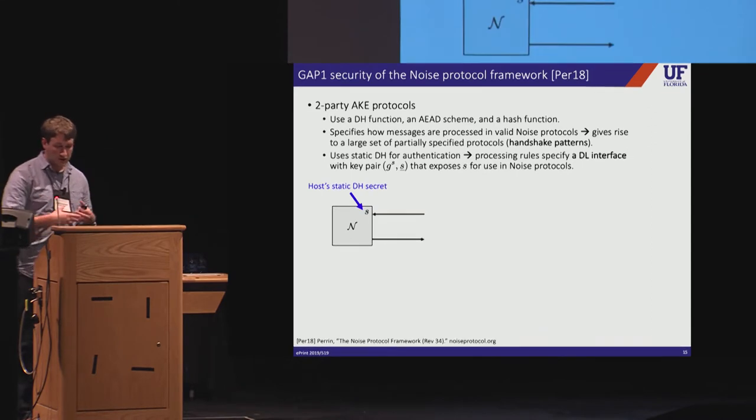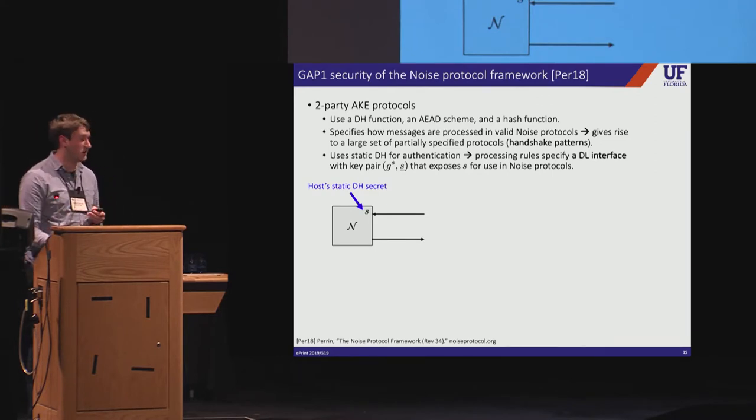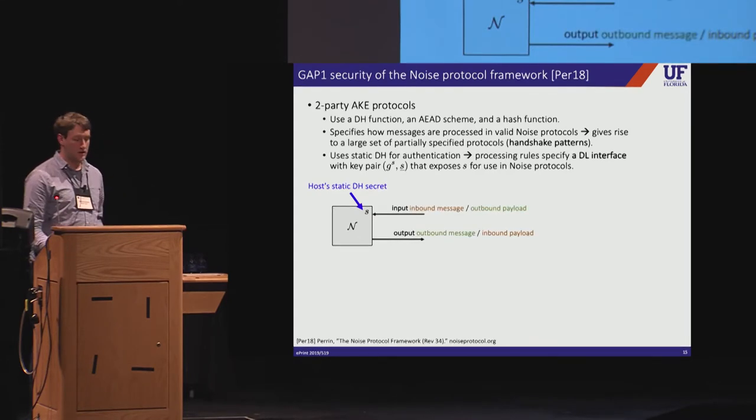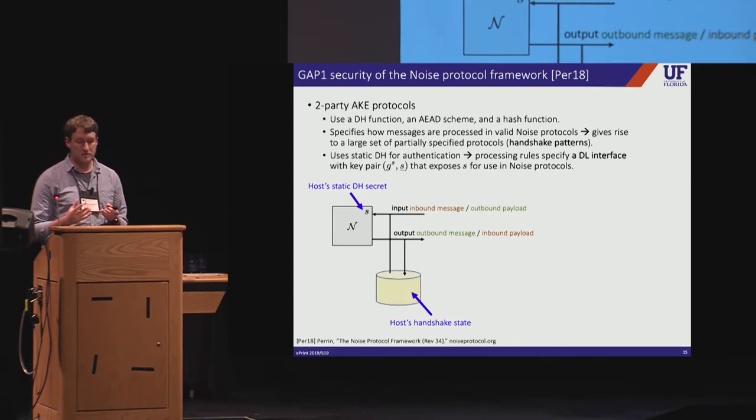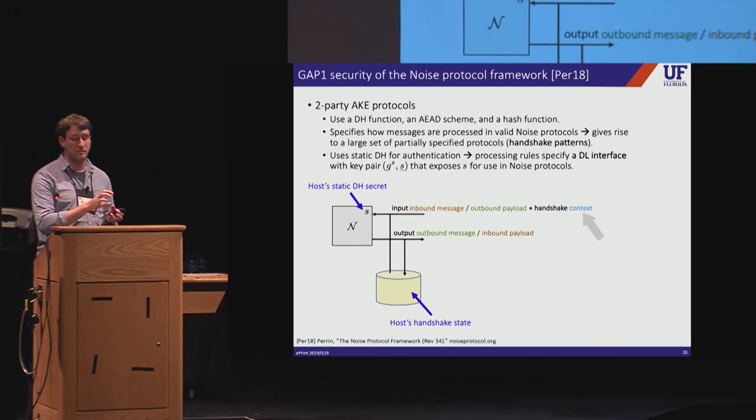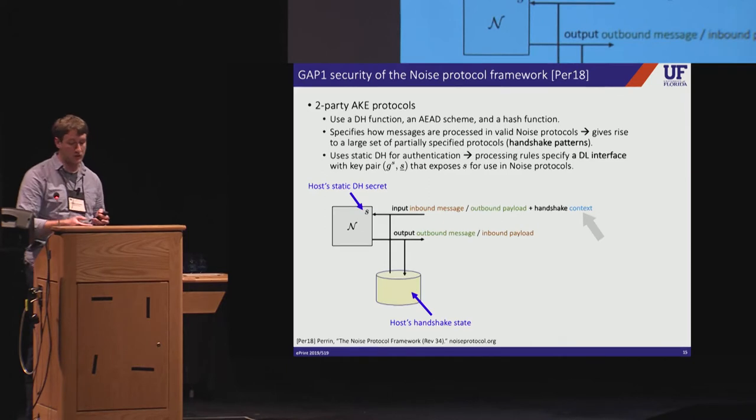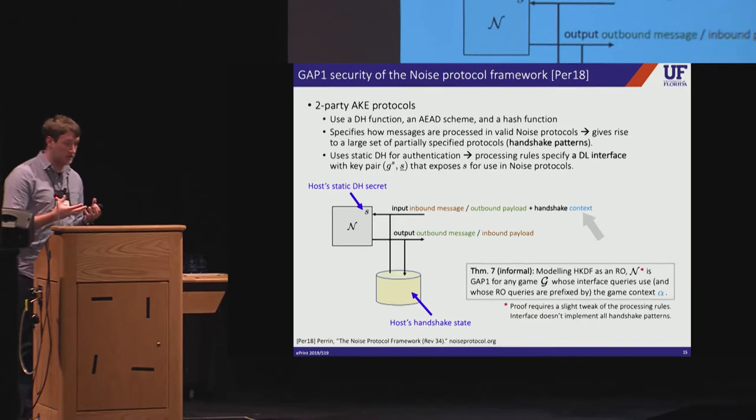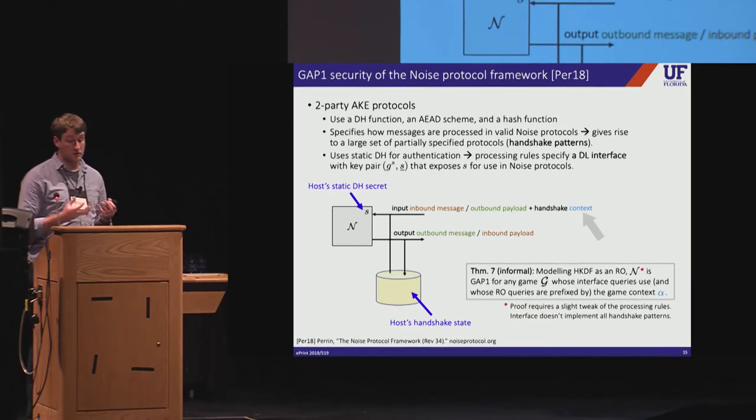So static Diffie-Hellman is the primary means of authentication in noise. So what we did in our paper was model the message processing rules as a discrete logarithm interface that exposes a host static secret for use in handshake protocols. So the interface specifies how to consume inbound messages as well as how to produce outbound messages. And it also specifies how to update the host state as a side effect. So the interface is also context separable. Noise uses a context string that is meant to bind protocol messages to the handshake pattern in which they're being either produced or consumed.